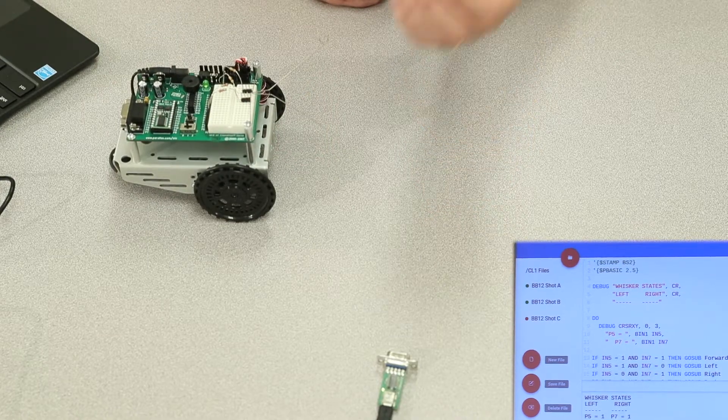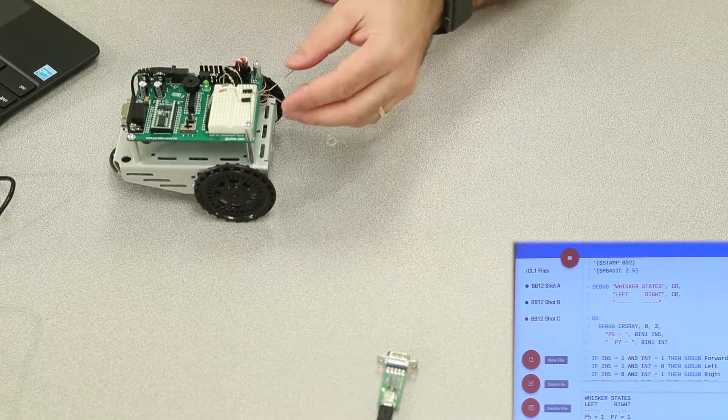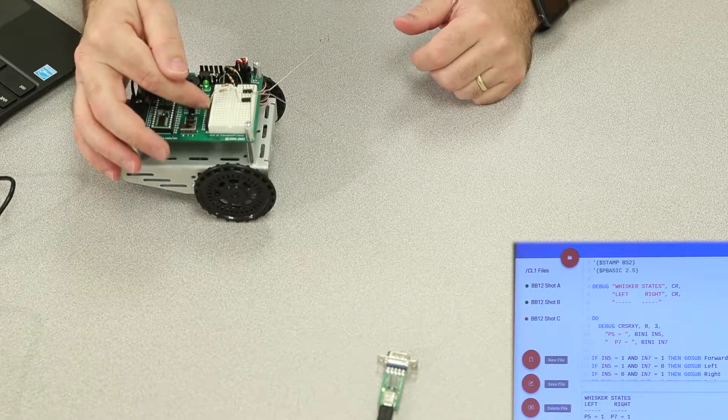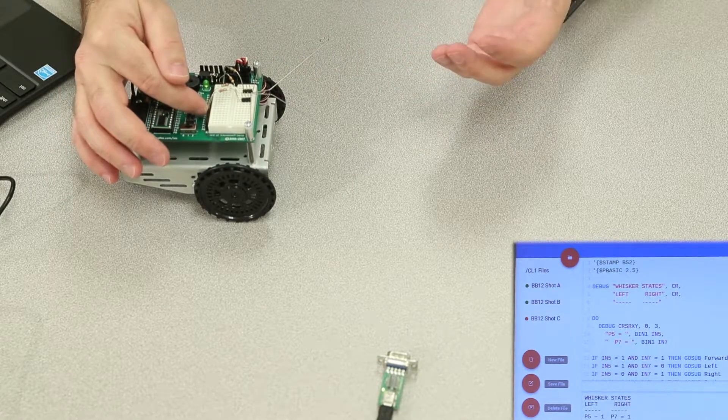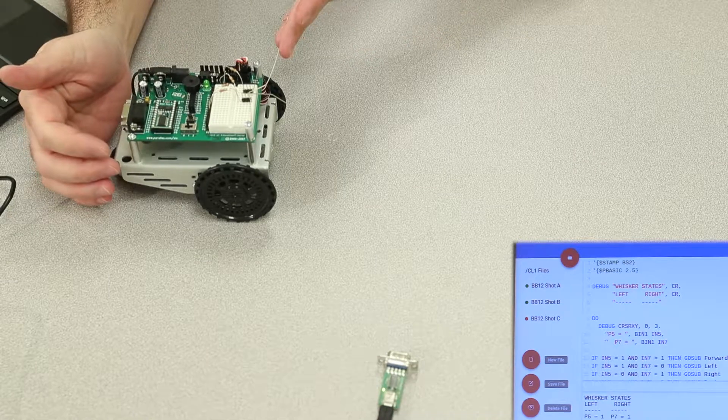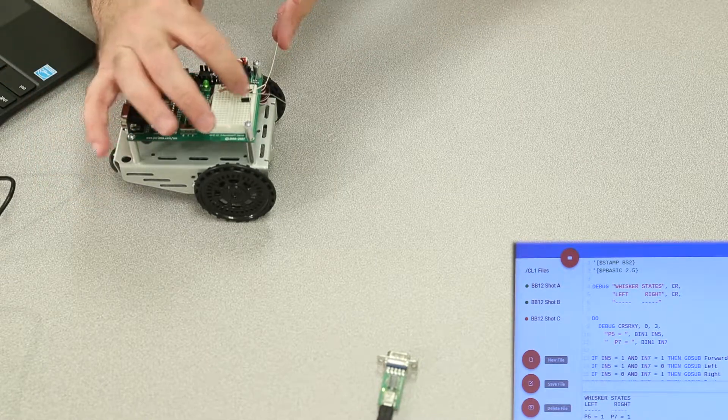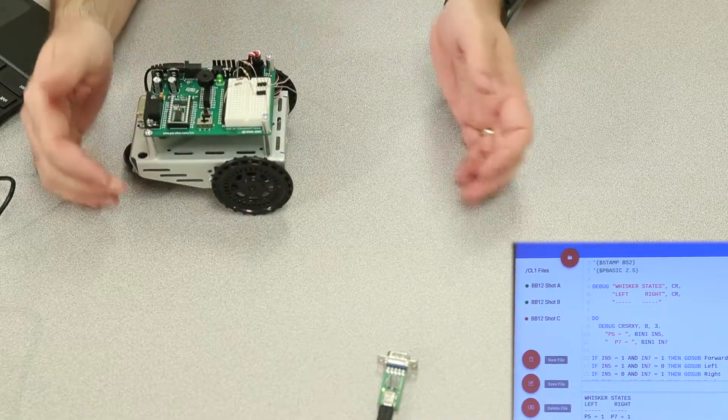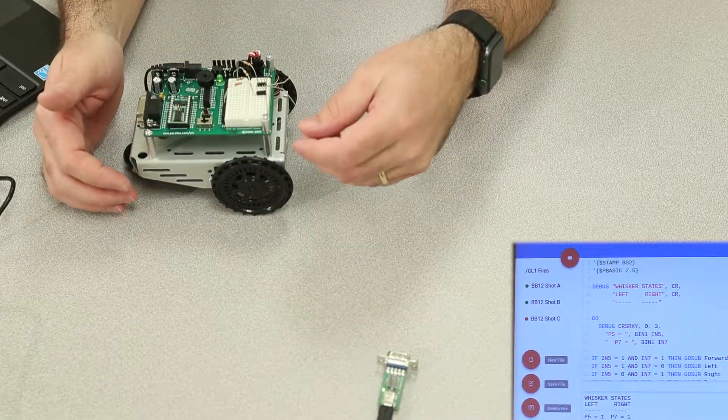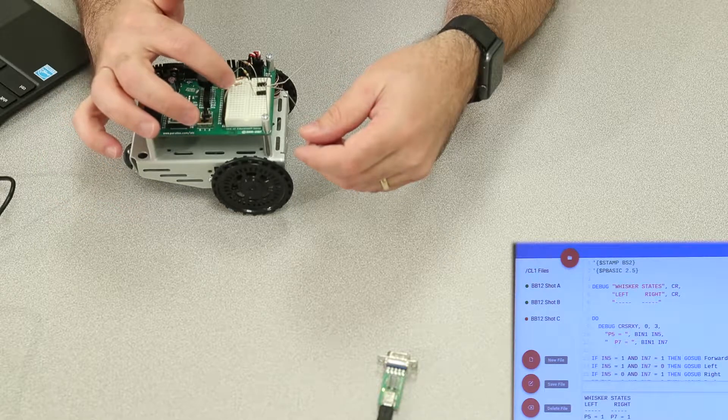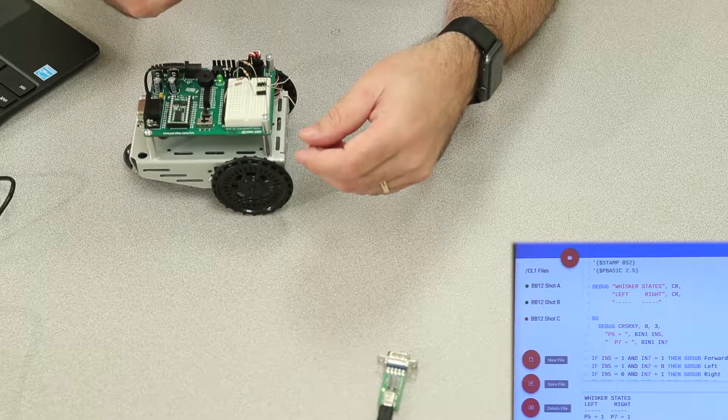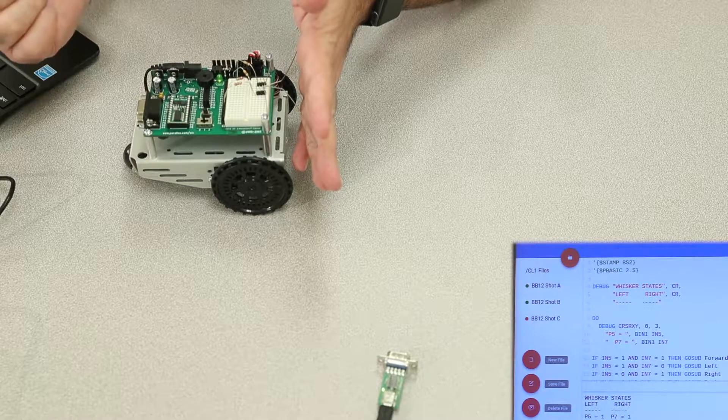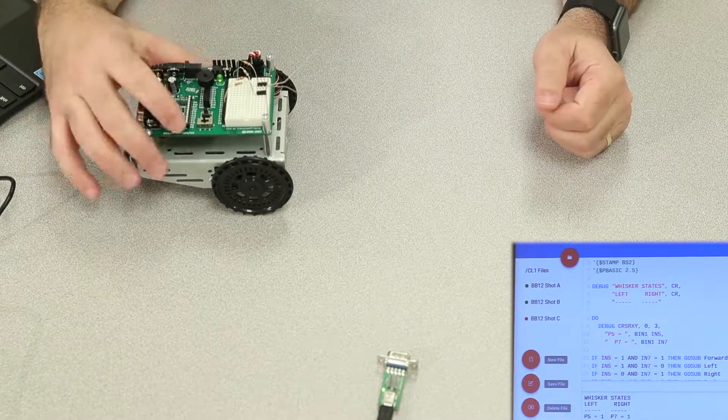What this code is going to test for now is if there's no obstacle, the bobot's going to roll forwards. If these whiskers are not touching the three pin headers, these two pins are seeing a one. So if I have a one and a one, roll forwards. If I make contact on the left whisker, which is pin five, that means the obstacle's on the left. I want to avoid it by turning right. If I connect to an obstacle on the right whisker that's connected to pin seven, that means I want to turn left to avoid the obstacle. And if I touch both whiskers, that means the obstacle's dead ahead, and I want to back up to avoid the obstacle. So let's test that code now.